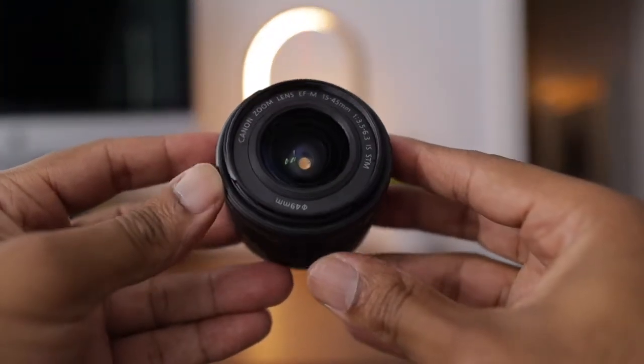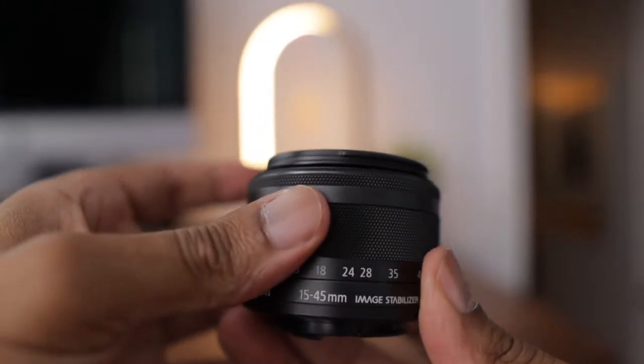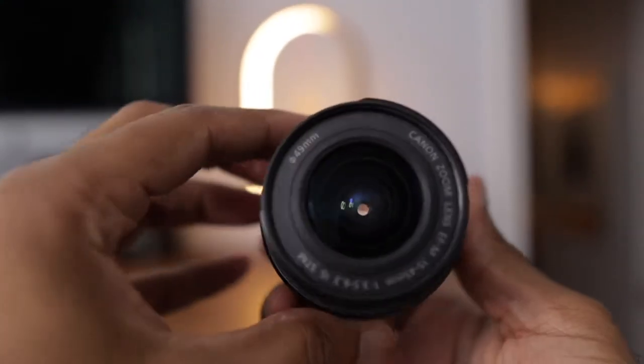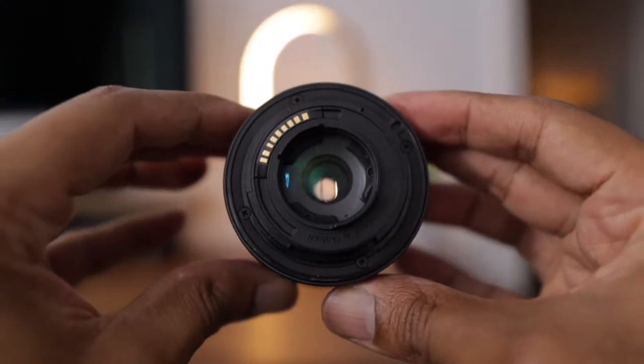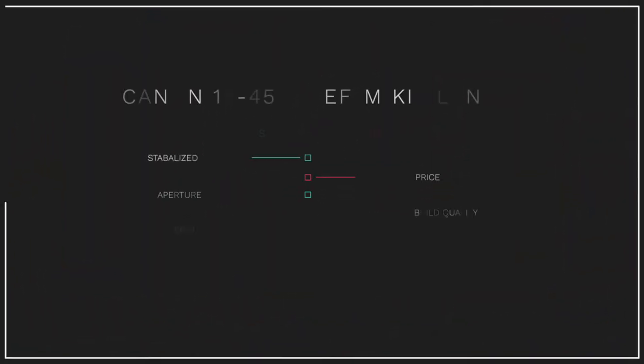The first lens we're going to try is the Canon EF-M 15 to 45 millimeter lens. This is the kit lens, but if you didn't get it with the camera it's $299, which is quite pricey for what you're getting — that's the first con. Some pros: it has image stabilization, a maximum aperture of f/3.5, and it only weighs 130 grams. For vlogging you want a light lens, and this is extremely light.